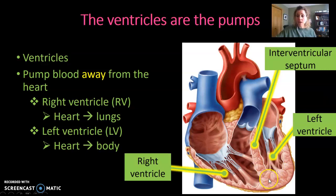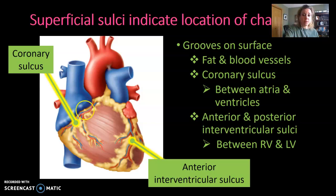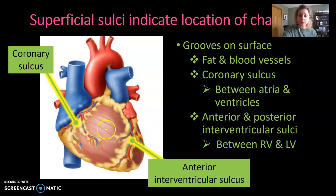The two ventricles are divided by the interventricular septum, a wall made of myocardium. Looking at the superficial landmarks on the heart, the first one to know is the coronary sulcus, which divides the right atrium from the right ventricle when looking at the anterior aspect. The anterior interventricular sulcus divides the right ventricle from the left ventricle as it runs down the front of the heart.